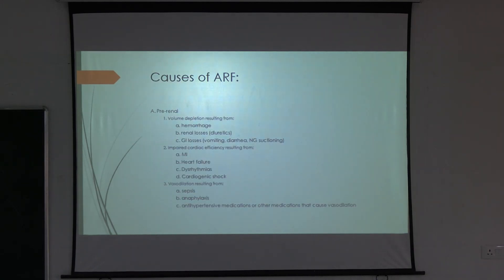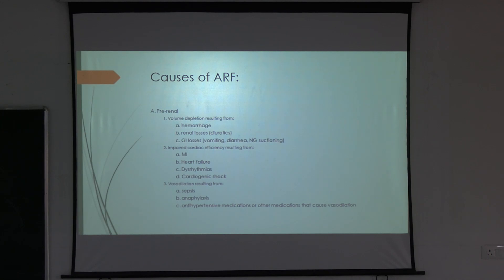Pre-renal causes include volume depletion, which reduces blood supply to the kidneys. This may be due to hemorrhage, diuretic administration, or GI losses such as vomiting and diarrhea causing hypovolemia. When the patient has diarrhea or is vomiting, we give fluids to the patient.